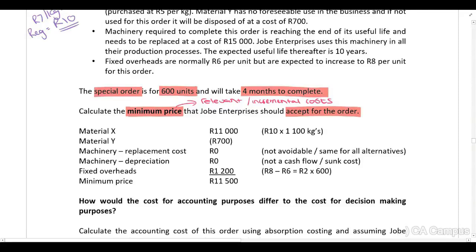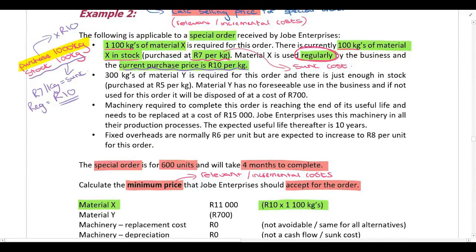In our solution, for Material X, the full 1,100 kilograms are valued at 10 Rand per kilogram — the current purchase price. For Material Y, 300 kilograms are required for this order and they have just enough in stock; it was purchased at 5 Rand per kilogram, which is a sunk cost.